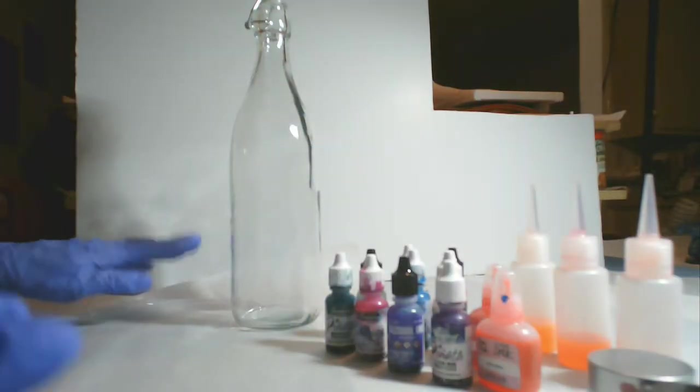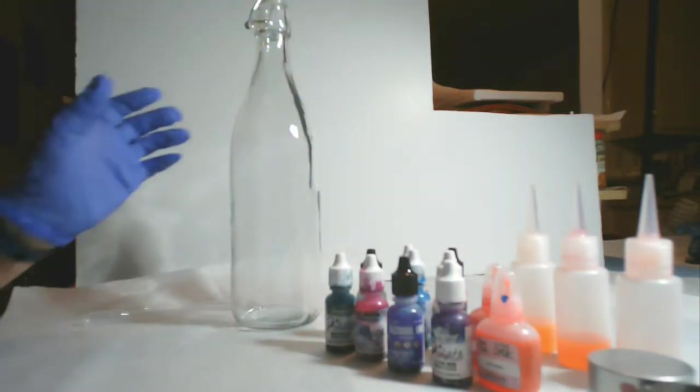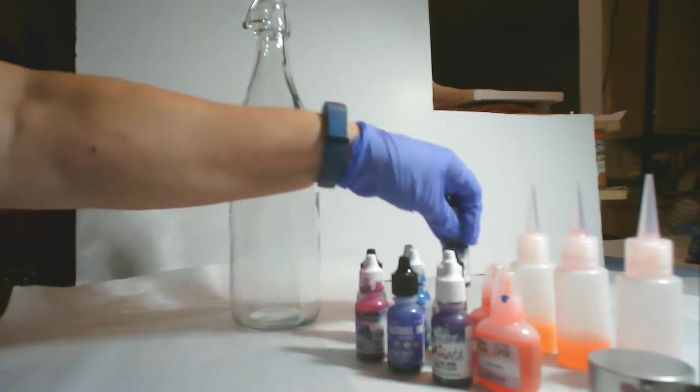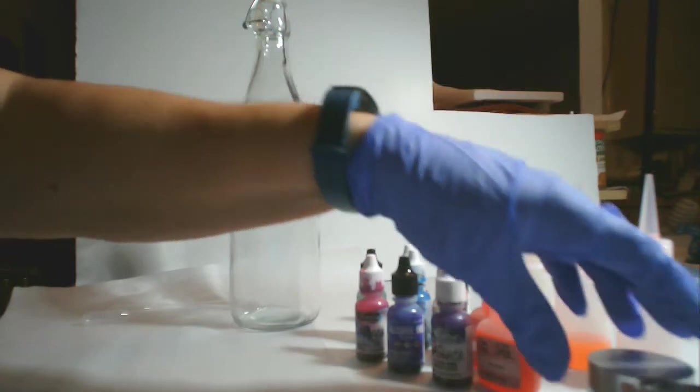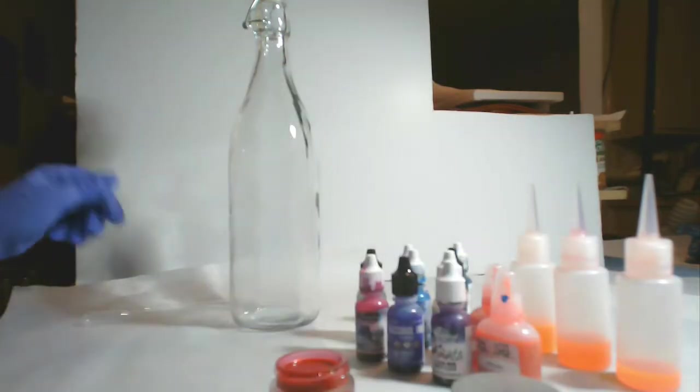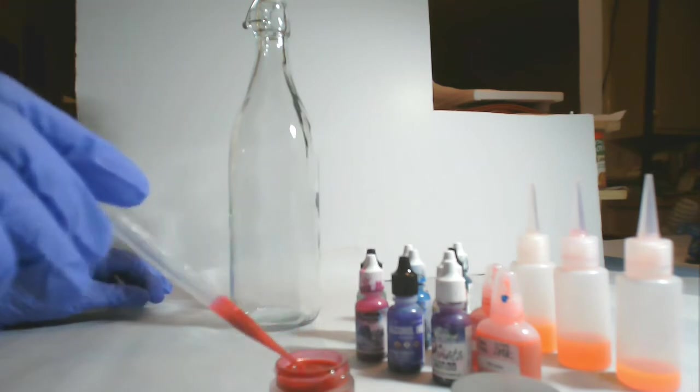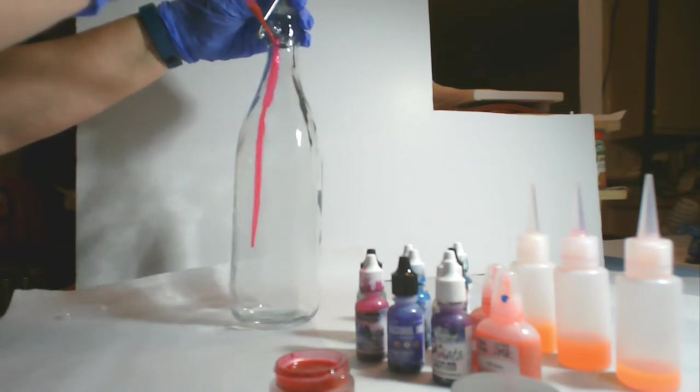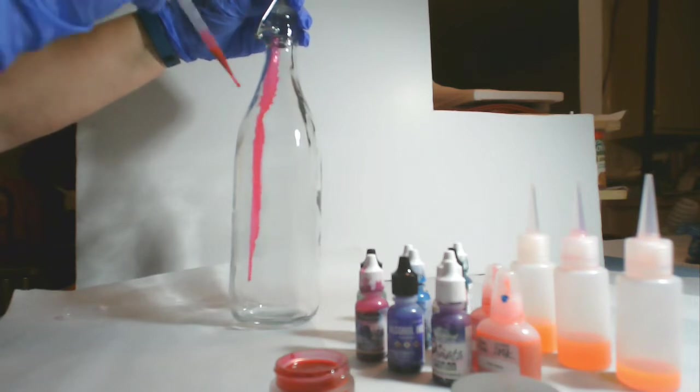This one here is red raspberry and the other one was mermaid. So let's get started and just start seeing what we can create on this bottle. I think I will start with the resin art luster pigments and see how they look.